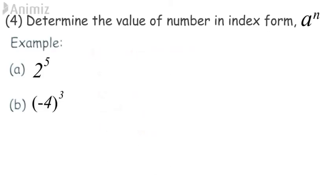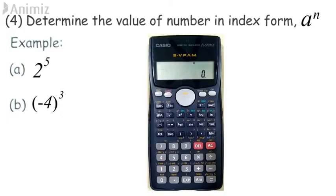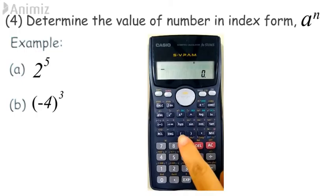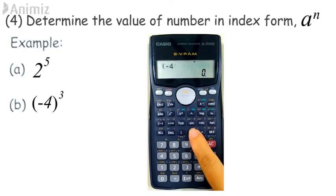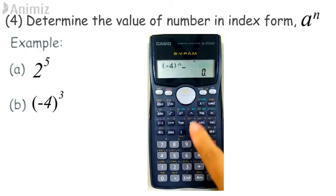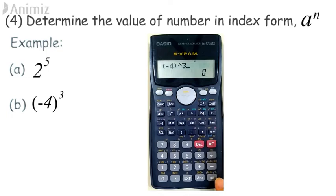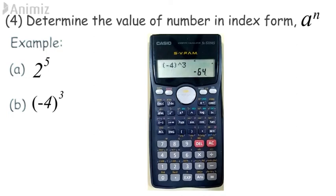Example B: the repeated multiplication method can be used to solve this problem, just the same as the previous example. Using a scientific calculator: press open bracket, negative 4, close bracket, to the power of 3, then press equals to get negative 64.